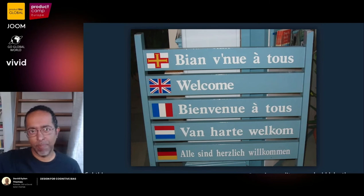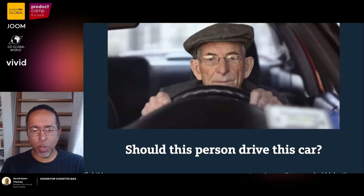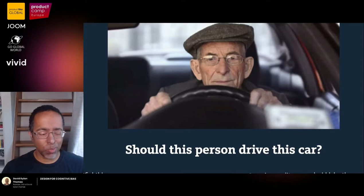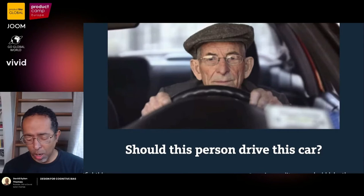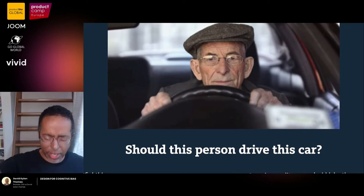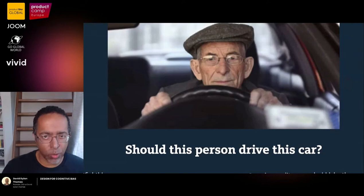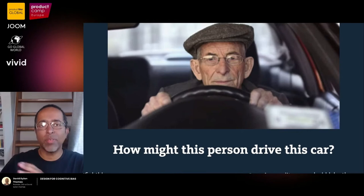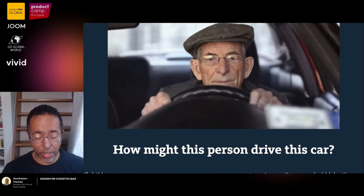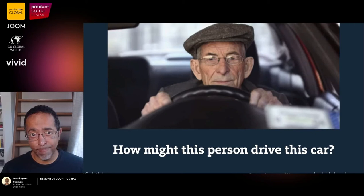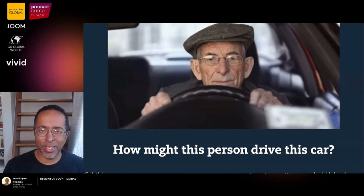The framing effect can also be used for good. There's an experiment where you show an audience a photo of an elderly person and ask, 'Should this person drive this car?' What you get is a policy debate — some people say old people are bad drivers, others say that's ageist. All you learn is who's on what side. Now take that same photo, show it to another audience, and ask, 'How might this person drive this car?' What you get is a design discussion — what if we change the shape of the steering wheel, or move the dashboard? I only changed two words, but by changing the frame of the conversation, I changed the entire conversation.